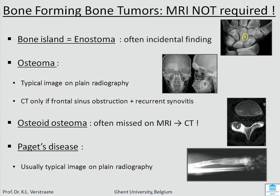The second tumor we have seen was in the head and it is an osteoma. An osteoma is a bone forming tumor — very compact bone, it's white, it's a typical image. You often find it in the frontal sinus and you just need CT if there are complications. The other one you will often miss when it's in the vertebra on an X-ray because it's hidden — it's the osteoid osteoma. You don't need MRI; CT is better to find the nidus.